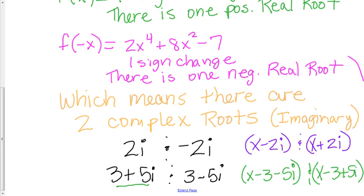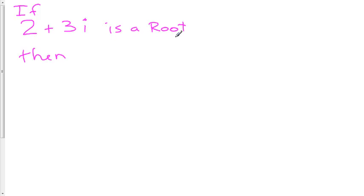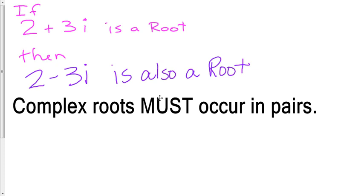The nice thing about complex roots: if 2 plus 3i is a root, then 2 minus 3i is also a root. Because complex roots must occur in pairs if all of the coefficients are real numbers. And when they occur in pairs, those pairs are called conjugates.